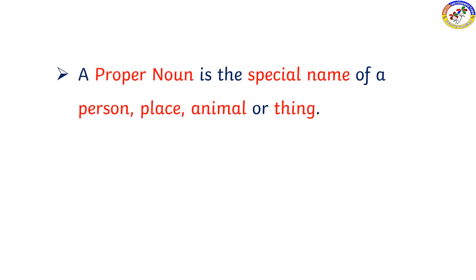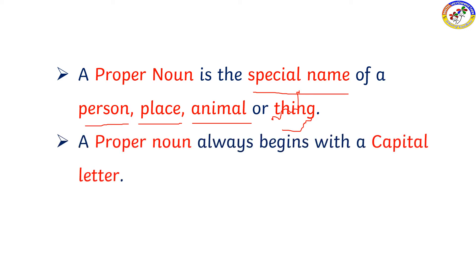Ok children, let us see about the proper noun. A noun is the name of a person, place, animal or thing. A proper noun is the special name of a person, place, animal or thing. A proper noun always begins with a capital letter.